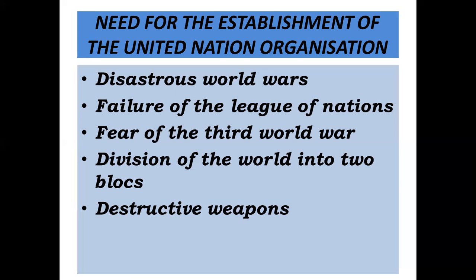The failure of the League of Nations was another reason. The USA did not join the League; it had no army of its own to enforce its resolutions. There was an imbalance — victorious nations gave too much power to themselves. When Japan annexed Manchuria, Italy conquered Abyssinia, and Germany annexed Austria, no action was taken. The League of Nations clearly failed. Additionally, there was a fear of a Third World War as nations began gathering new technical weapons.